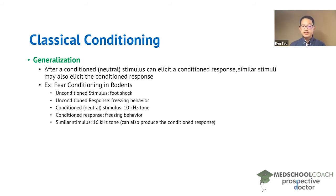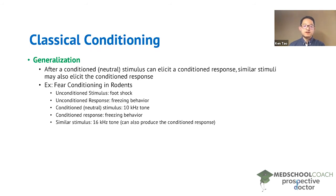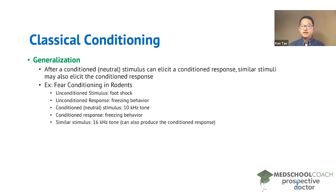We can look at an example of fear conditioning in rodents. The unconditioned stimulus is a foot shock, and the unconditioned response is freezing behavior — this is innate. If you give a rodent a foot shock, they will automatically freeze. The conditioned or neutral stimulus is a 10 kilohertz tone. Animals haven't heard this tone regularly, so when you present it, the animal isn't going to respond — it is neutral. If you pair this conditioned stimulus with the foot shock, over time, presenting the 10 kilohertz tone alone will cause the animal to exhibit freezing behavior. However, if you present a similar stimulus, such as a 16 kilohertz tone, you'll find that the 16 kilohertz tone may also be able to produce the freezing behavior, the conditioned response. This is generalization — when similar stimuli can also elicit the conditioned response.